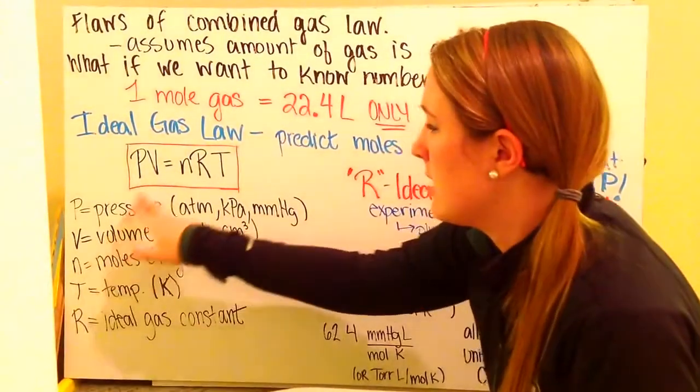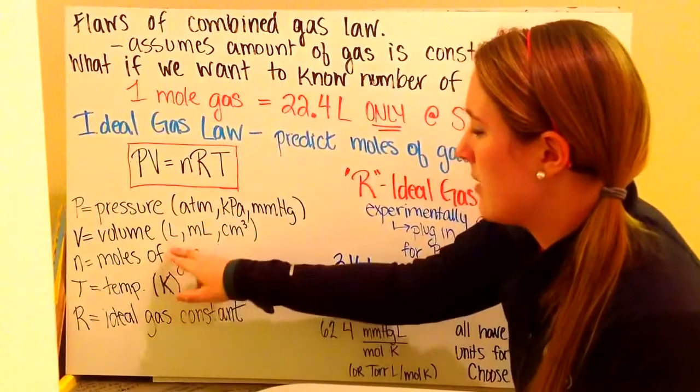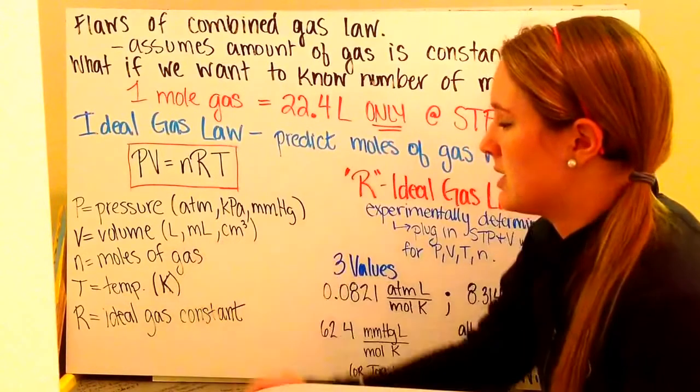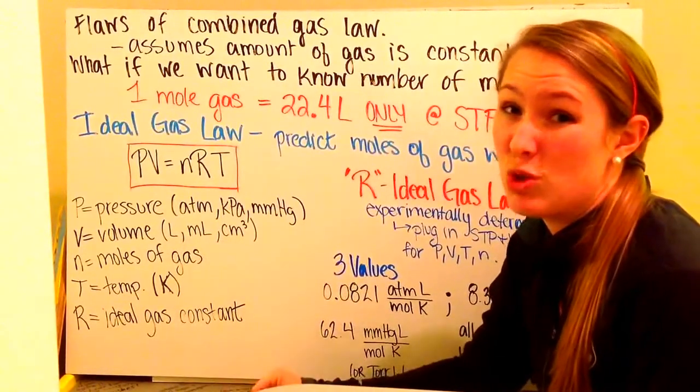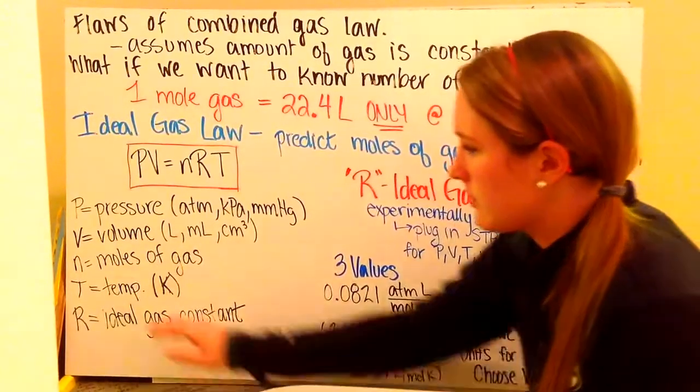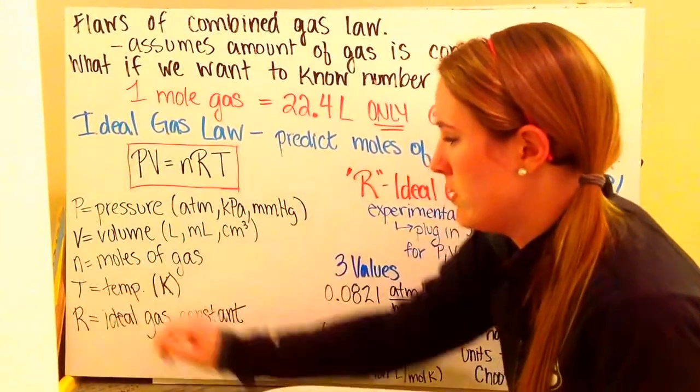I have V, which is volume. That can be measured in liters. Normally liters. If you're given milliliters and centimeters cubed, you want to convert them to liters. Remember, there's 1,000 milliliters in a liter.